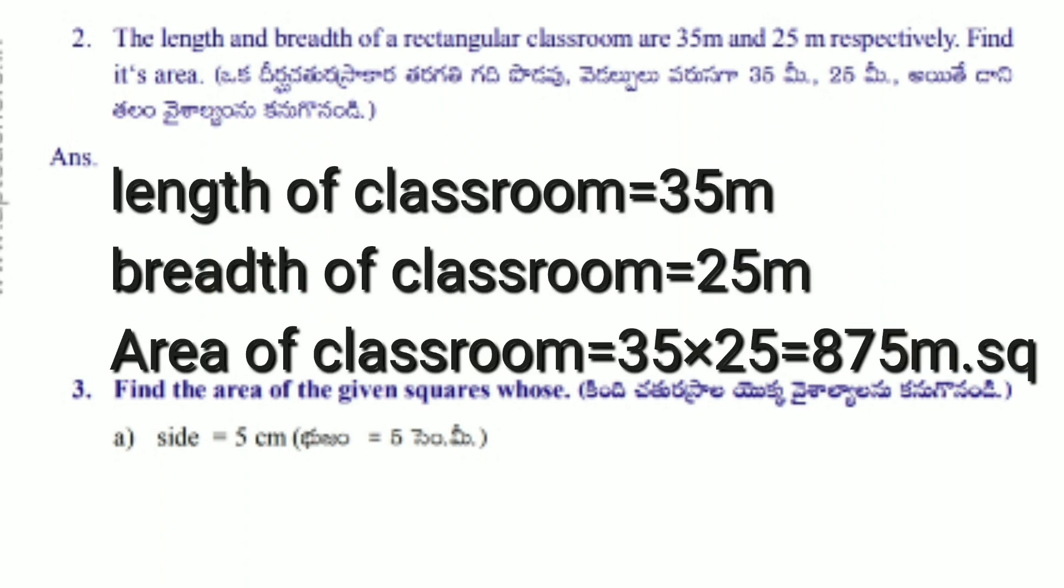Answer: Length of the classroom equals 35 m, breadth equals 25 m. Area of the classroom equals 35 times 25 equals 875 square meters.